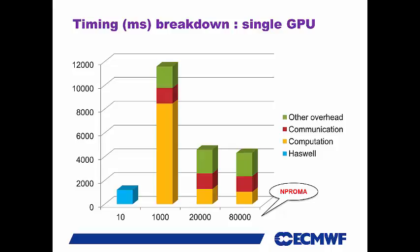We're quite far behind in total time. But looking at just the positive side — ignoring overhead — we are beating Haswell hands down, as Peter Mesmer said. If you think about N-proma 80,000 on GPU versus N-proma 10 on Haswell, the computation is actually somewhat faster on GPU. And Haswell here is the full 24-core system at 2.5 GHz — not a single core.